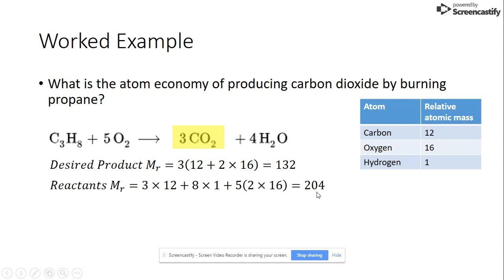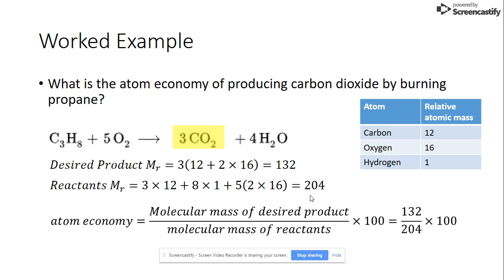We've now got the two things we need to substitute into the equation. The molecular mass of the desired product is 132 that goes on the top, molecular mass of all the reactants we've added it all up getting 204 we substitute that in multiply that by a hundred and that will give us the answer so we can see the atom economy is 64.7%.